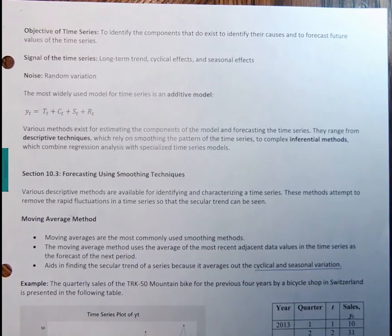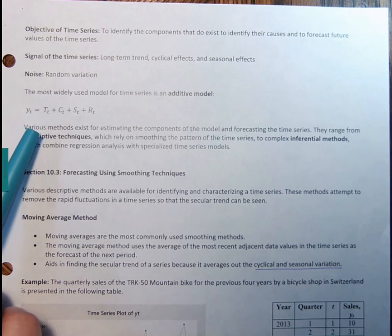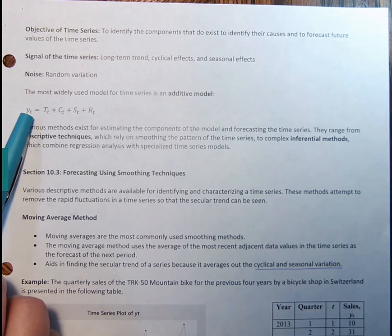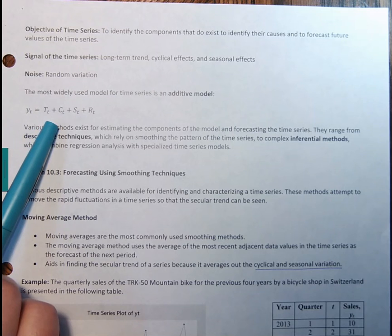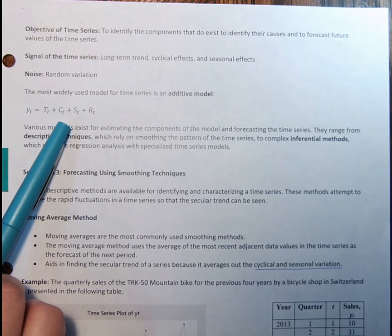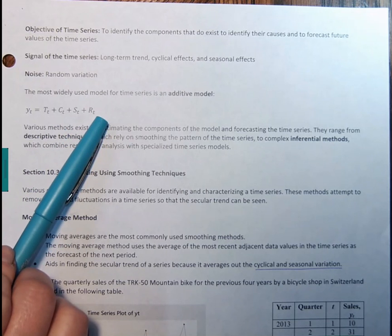All right, so again, just to kind of summarize this section, the objectives of the time series are to identify the components that do exist, and then to identify their causes and to forecast future values. Signal of the time series, those are the long-term or secular trends, cyclical effects, and seasonal effects. And then the noise is that random variation. So the most widely used model for time series is the additive model, and you have that here. And so essentially what this is saying is the response variable at time t is a function of the secular trend component, the cyclical fluctuation, the seasonal variation, and the residual effect. And so notice that this is again additive, and it might be that some of these effects are zero.